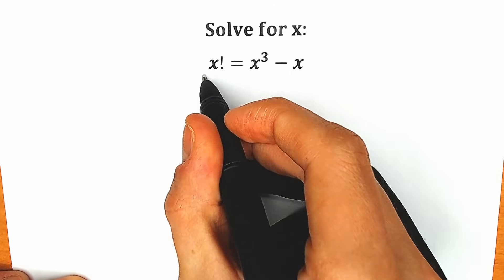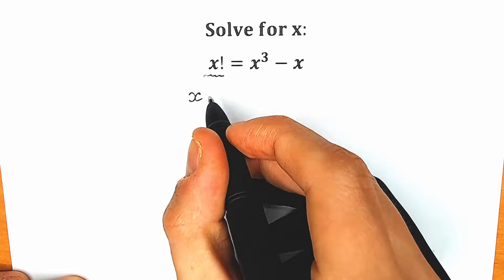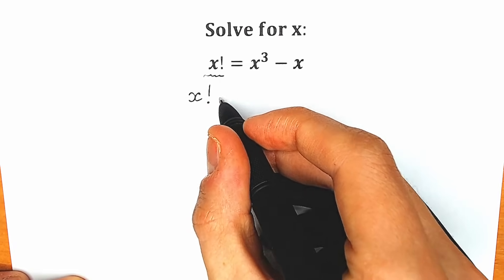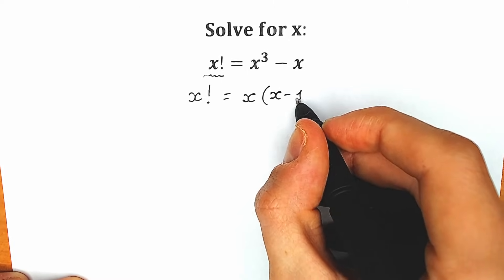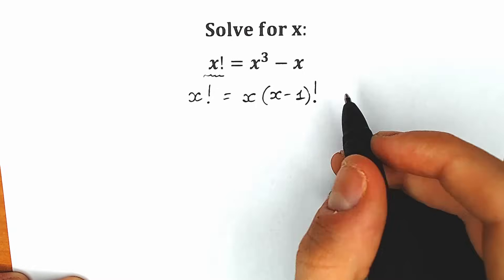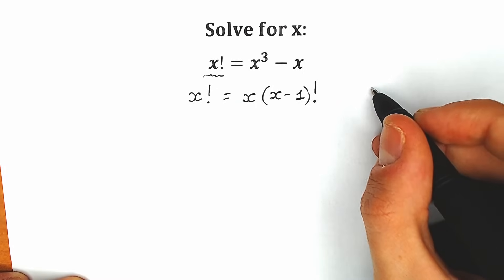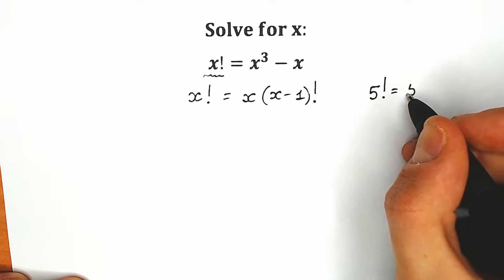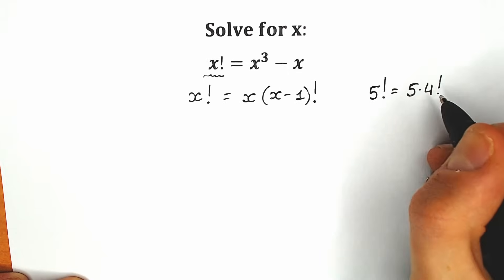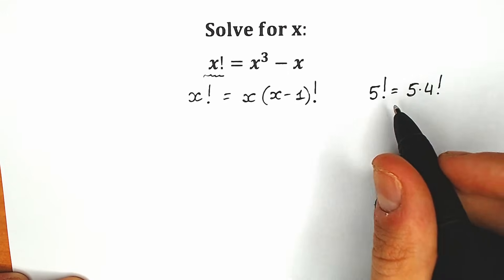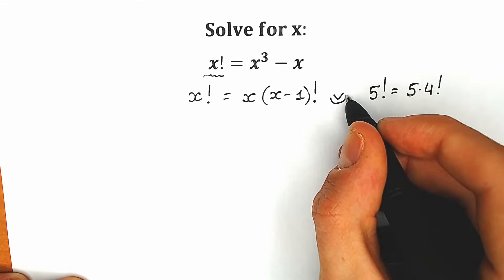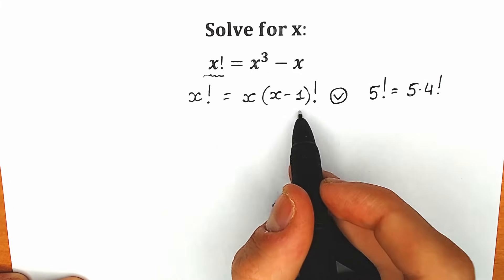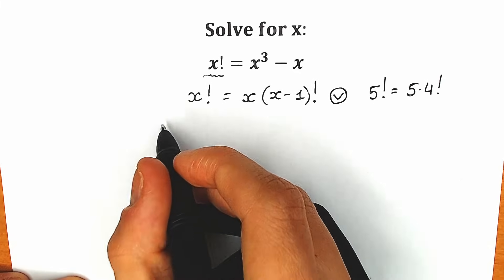So first of all, let's start with x factorial. We can rewrite x factorial as a product: x times (x-1) factorial. For example, 5 factorial can be written as 5 times 4 factorial. That works absolutely great in terms of constants, and we are going to apply the same logic with this variable. So let's replace x factorial with this product right now.